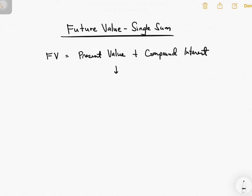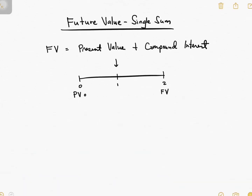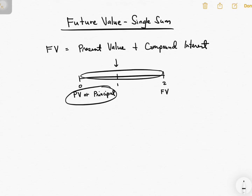To present this graphically, let's say you have a two-year timeline. Your present value or PV is here while your future value or FV is here. When we say present value, this is also our principal. To compute the future value graphically, first you need your present value or principal and then add your compound interest.